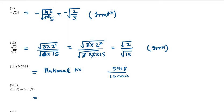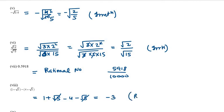The 8th part is (1 + √5) − (4 + √5). Opening the brackets gives 1 + √5 − 4 − √5. The √5 terms cancel, so we get 1 − 4 = −3. And −3 is a rational number.